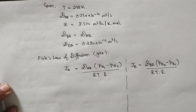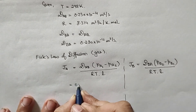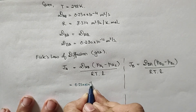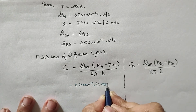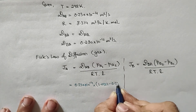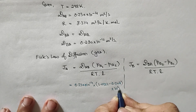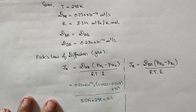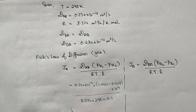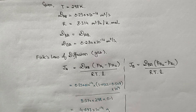Substituting all values for J_A: (0.230 × 10⁻⁴) × (1.0132 − 0.507) × 10⁴ divided by (8.314 × 298 × 0.1). The final answer comes out as J_A = 4.697 × 10⁻⁴ mol/(m²·s).